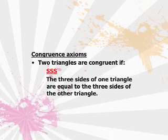And we have shown that there are four different ways in which we can show that two triangles are congruent. The first of those was a case we called side-side-side. We said that two triangles are congruent if the three sides of one triangle are equal to the three sides of the other triangle.